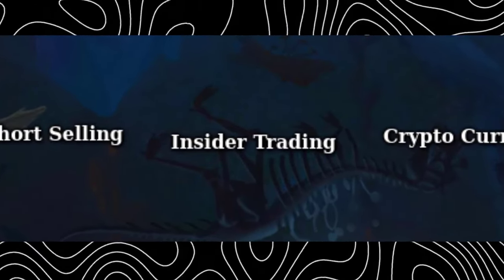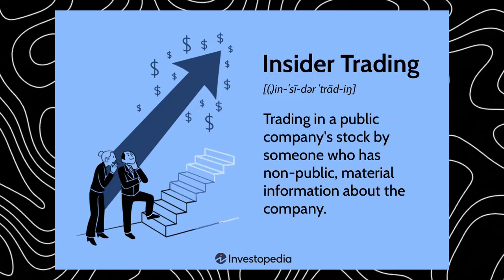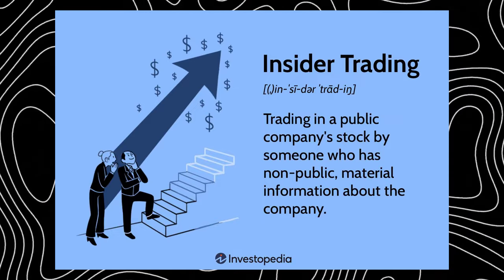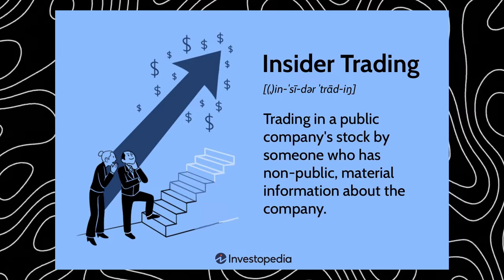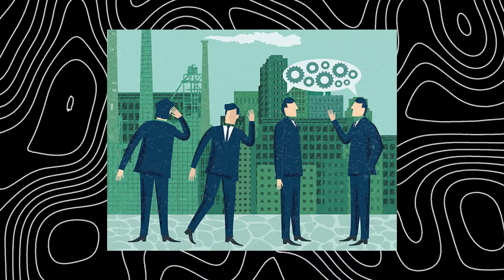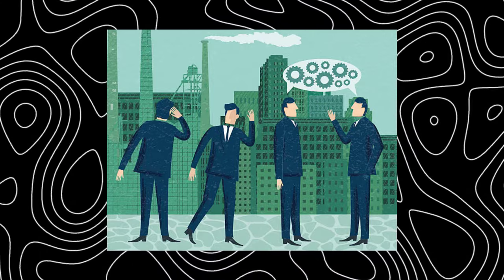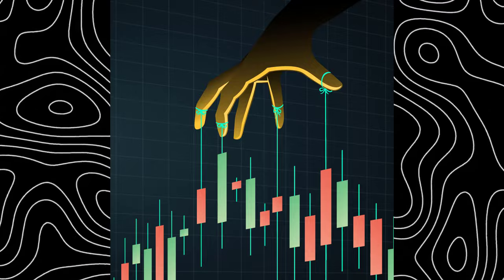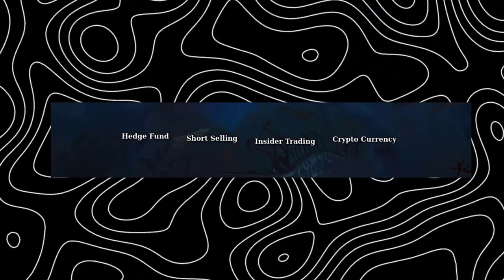Insider trading involves trading a public company's stock based on non-public or private information. This can involve a company employee trading on information discussed in an internal meeting, or an outsider who gets information from someone within the company. It's fraudulent, illegal, and unethical. This law exists to give all traders a fair standing when investing, as insider trading gives insiders an unfair advantage and undermines the fairness and integrity of financial systems. There have been many documented cases where executives and even politicians have broken this law.